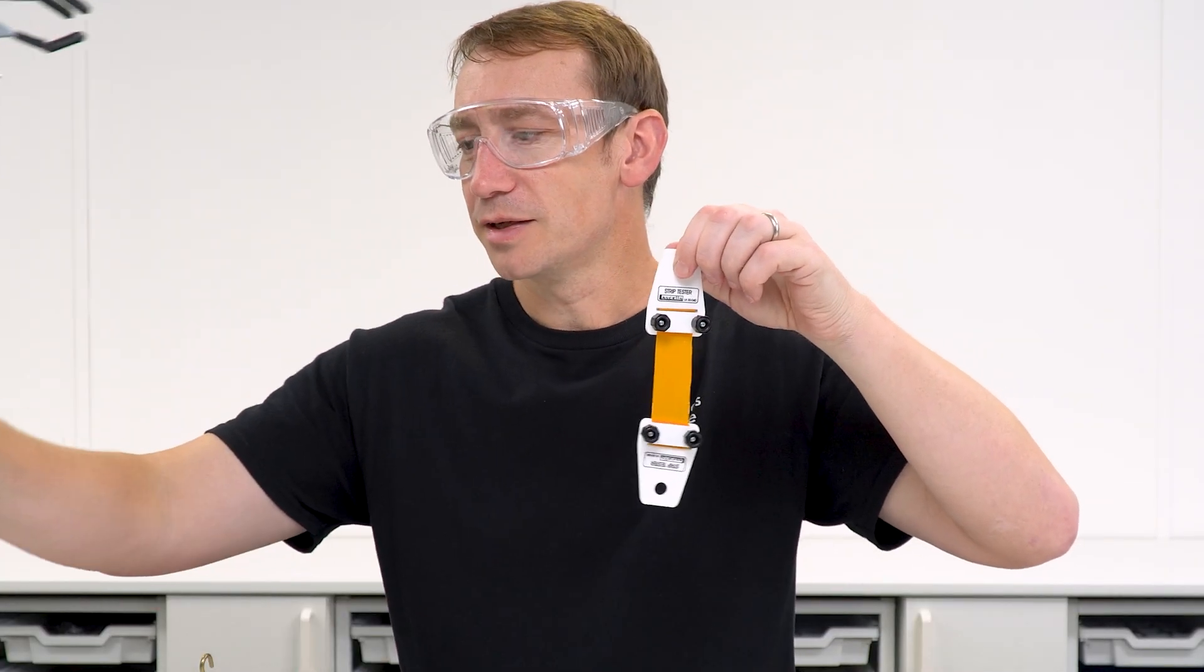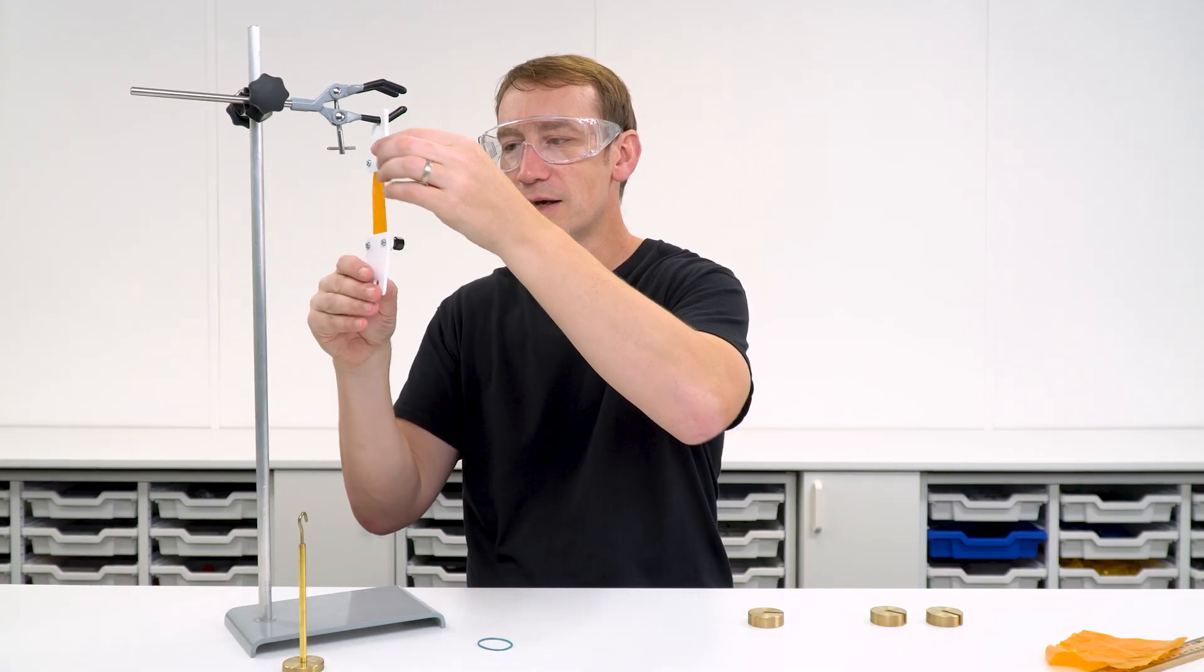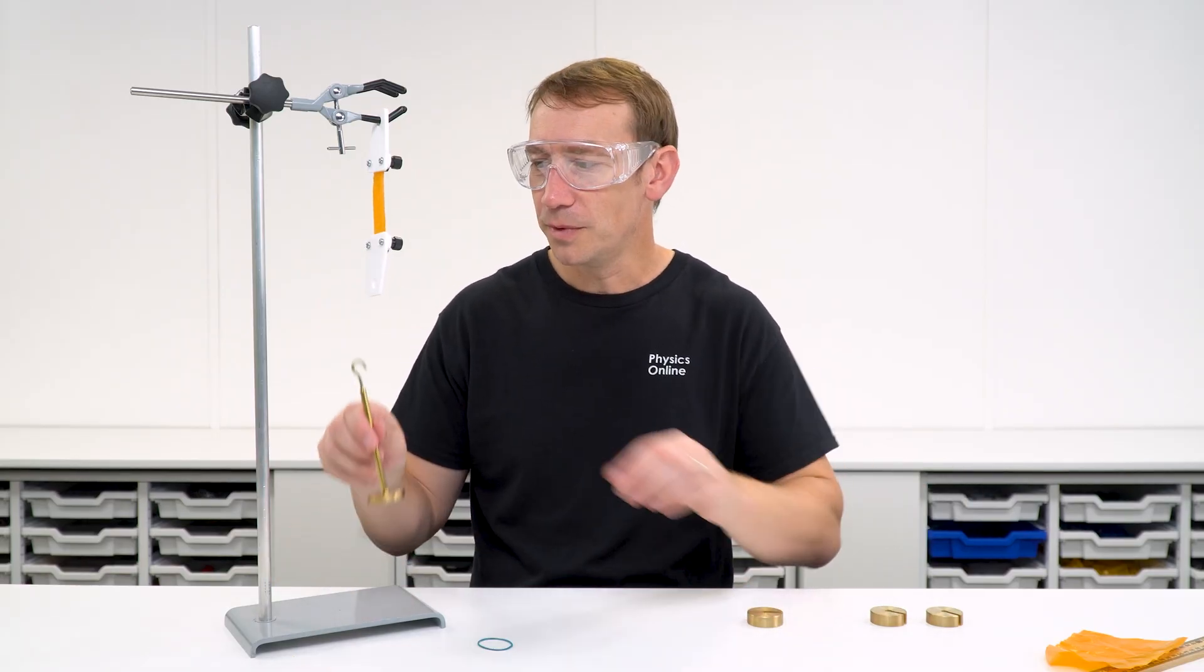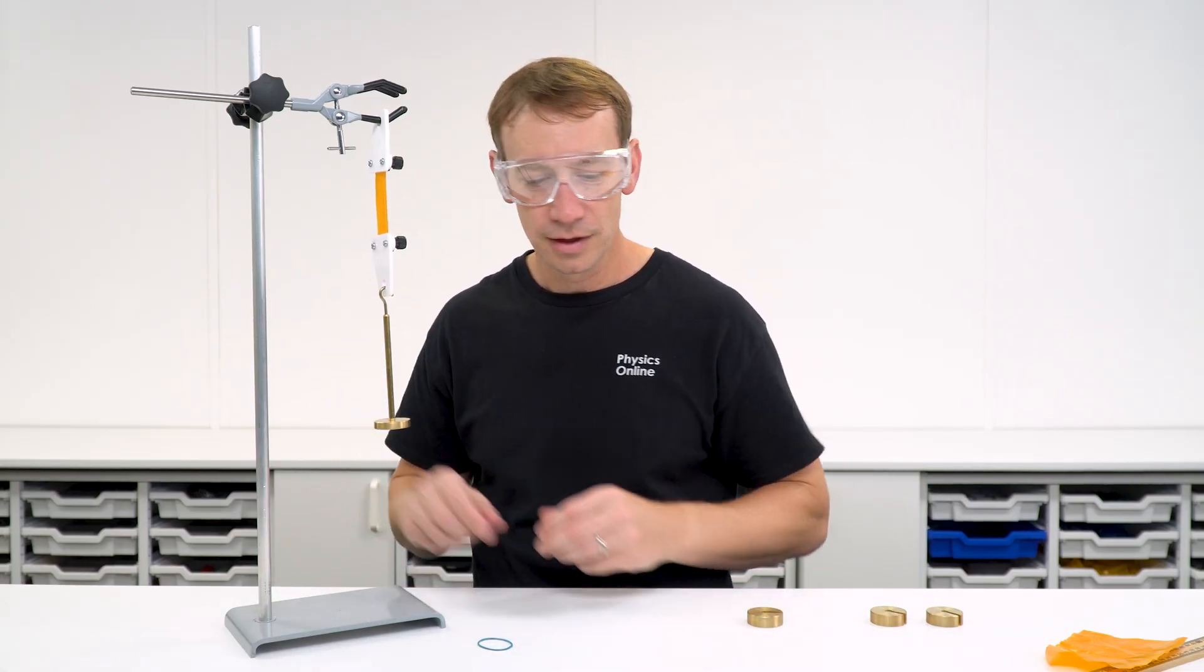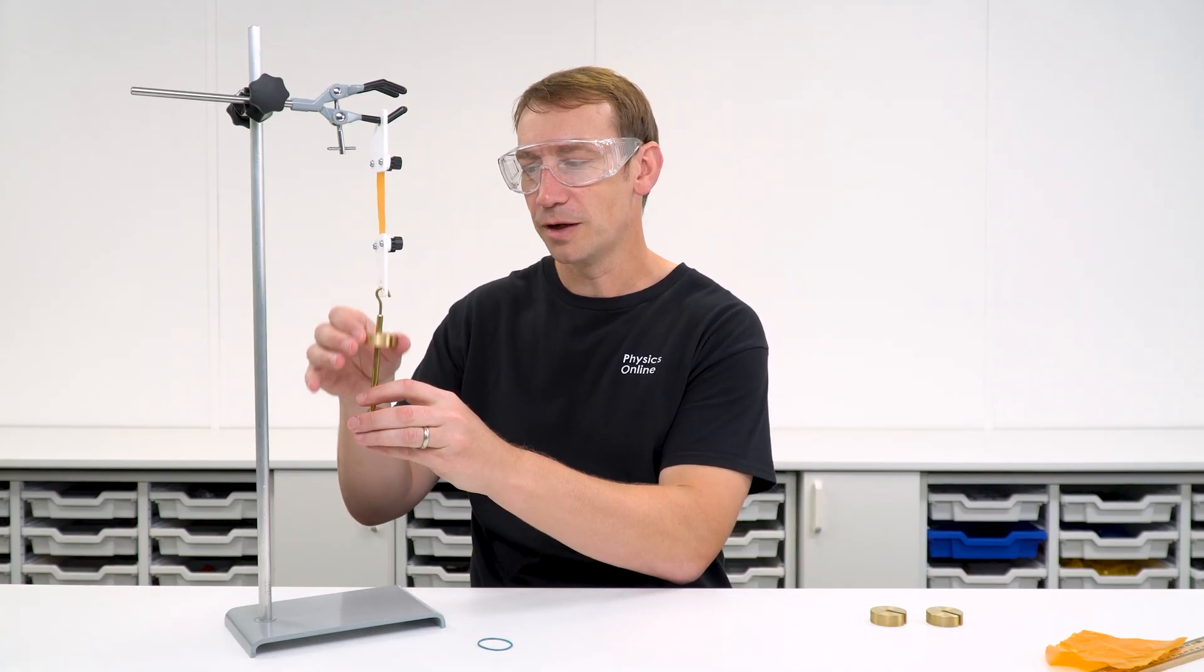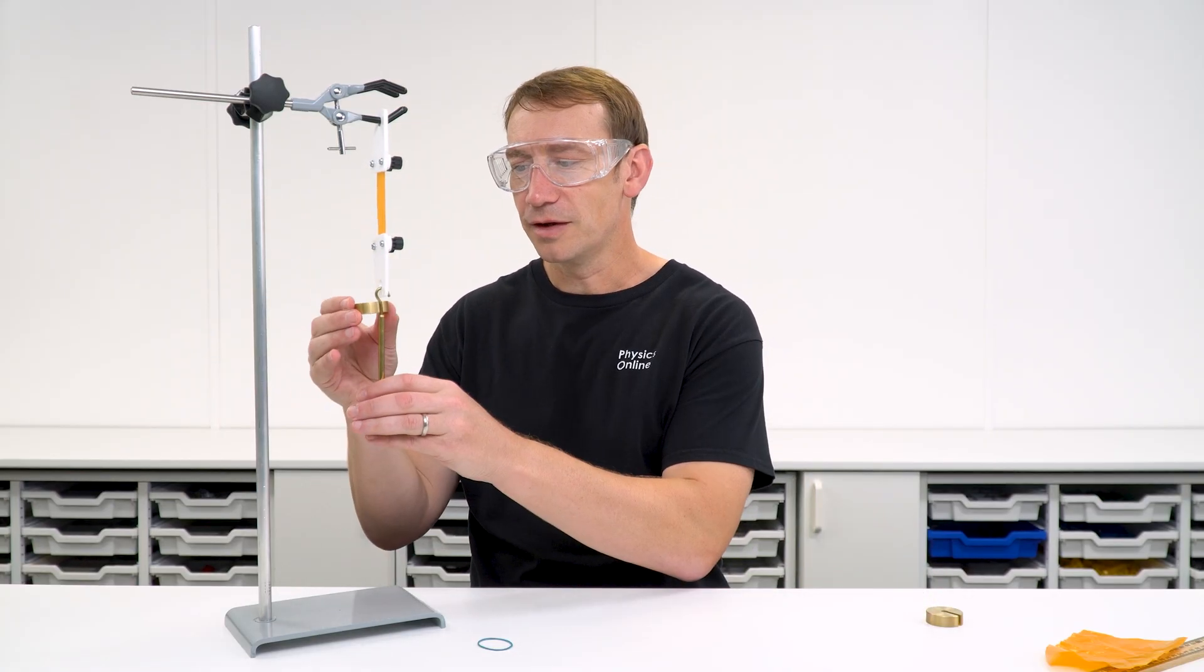We can then put it into our retort stand as we would normally. So I'm just going to hang that over there. We can then measure the initial length and then we can start to apply masses onto this. There's a weight so there's a force being applied to it. And we can then investigate its behavior as it's loaded.